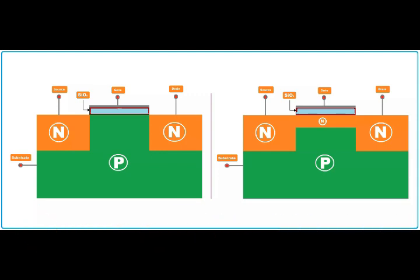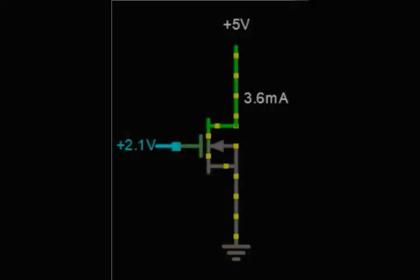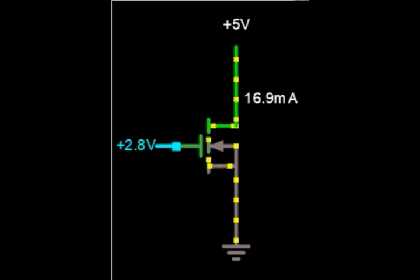In Enhancement MOSFET, no channel is created in advance between the drain and the source. By applying the appropriate voltage to the base of the gate, the current passing channel is created. The width of the channel depends on the voltage level applied to the gate, and as a result, the current passing through it can be controlled.